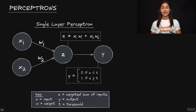The algorithm to compute the output from a single layer perceptron is relatively simple — just two steps. Step one: calculate the weighted sum of the inputs. Step two: compare the weighted sum to the threshold value to obtain the final binary output.